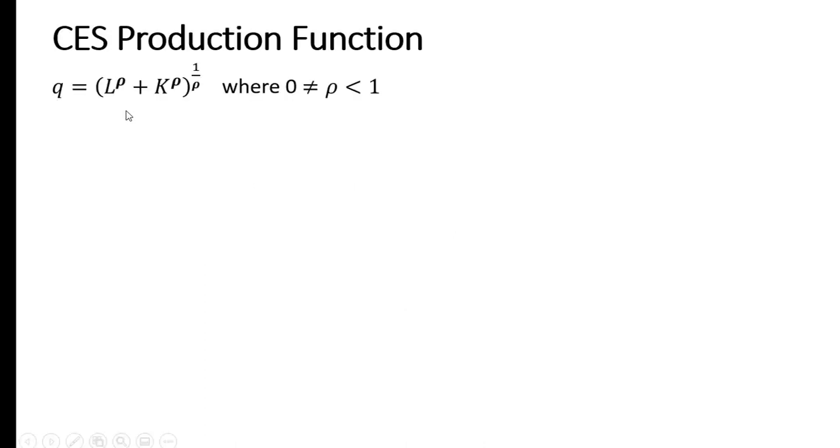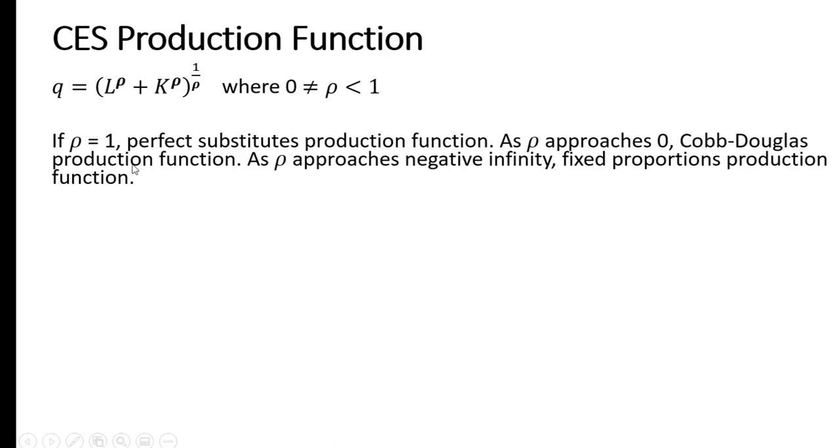Here is a general form of the CES production function. Quantity of output is a function of labor and capital, and we've got this parameter here, rho. If rho equals 1, this production function will be a perfect substitutes production function. As rho approaches 0, we get a Cobb-Douglas production function. And as rho approaches negative infinity, we get a fixed proportions production function.